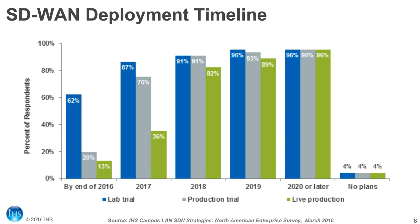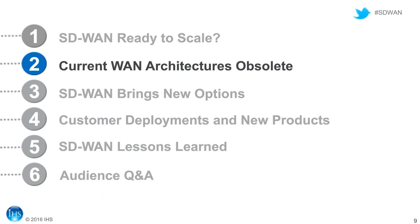We also asked respondents about their timeline for evaluating and deploying SD-WAN. There's a large transition from lab trial to production trial to live production over the next two to three years. By end of 2016, 62% of respondents said they would be in lab trials; in 2017, 76% expected production trials and 36% expected live production by year end. I'll note survey results tend to be slightly more optimistic than reality. I'll now push over to Vijay from CloudGenX to talk about why current WAN architectures are obsolete.